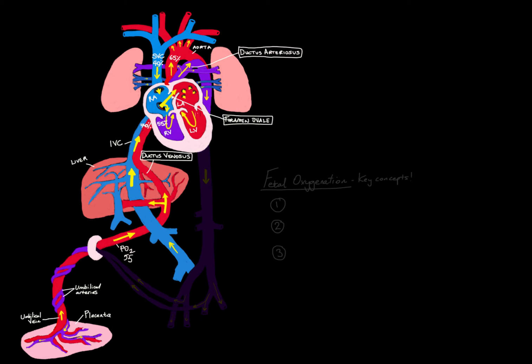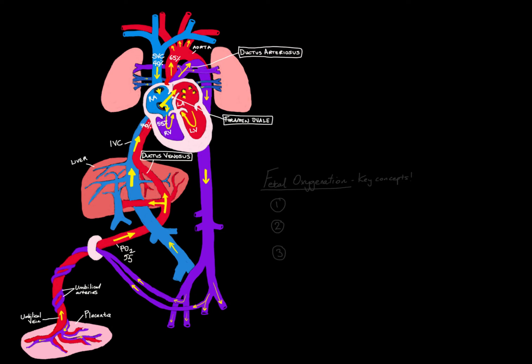When blood gets to the ascending aorta after being ejected from the left ventricle, it goes to a few places. Our priority is getting oxygenated blood to the brain: about 60% goes up into the head and neck through the carotids and subclavian arteries. About 30% goes around the arch of the aorta into the descending aorta to supply the rest of the body — kidneys, gut, and so on. The remaining 10% goes through the coronary circulation to feed the heart muscle itself.